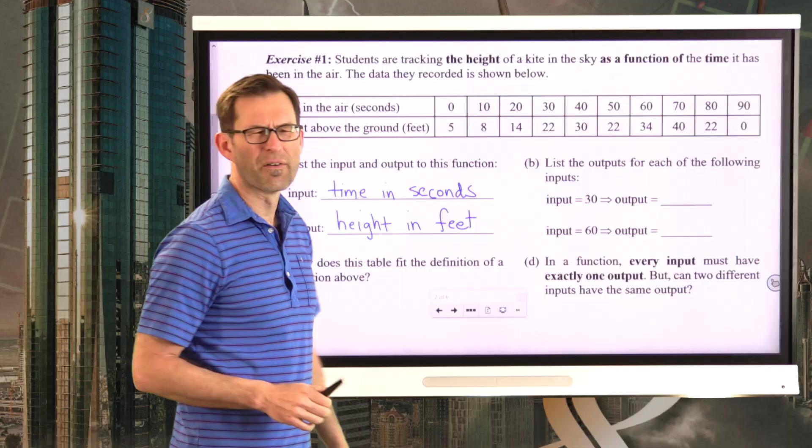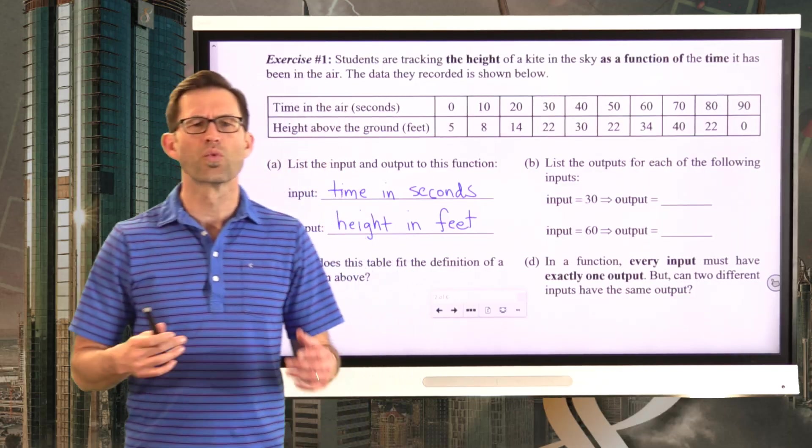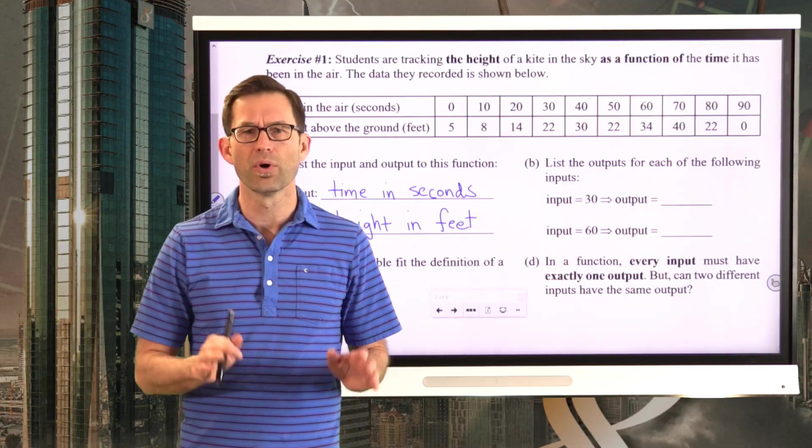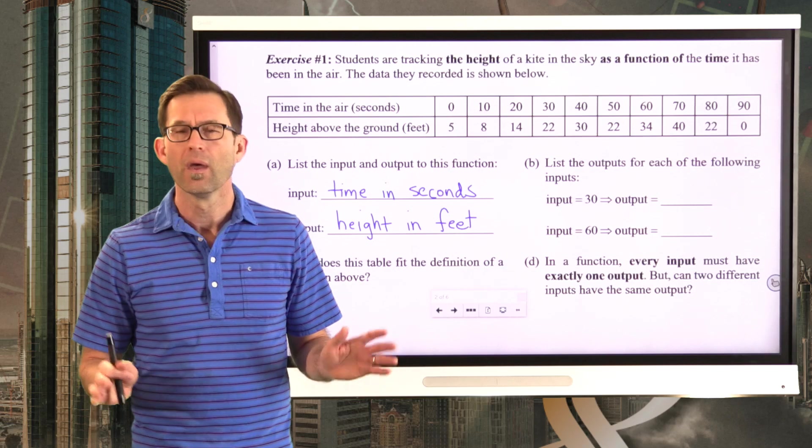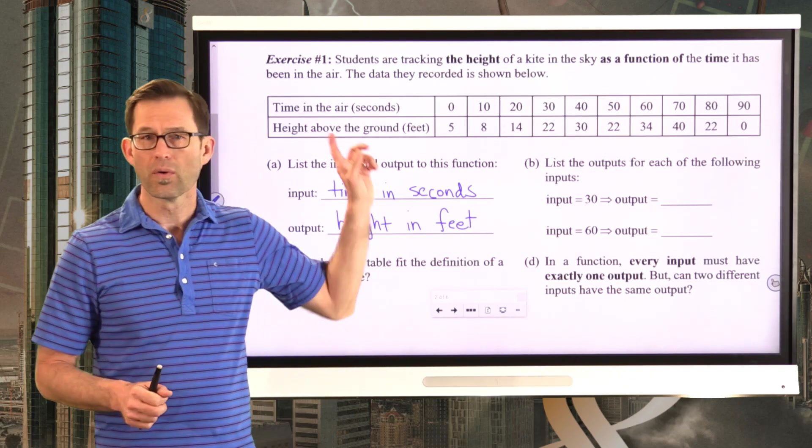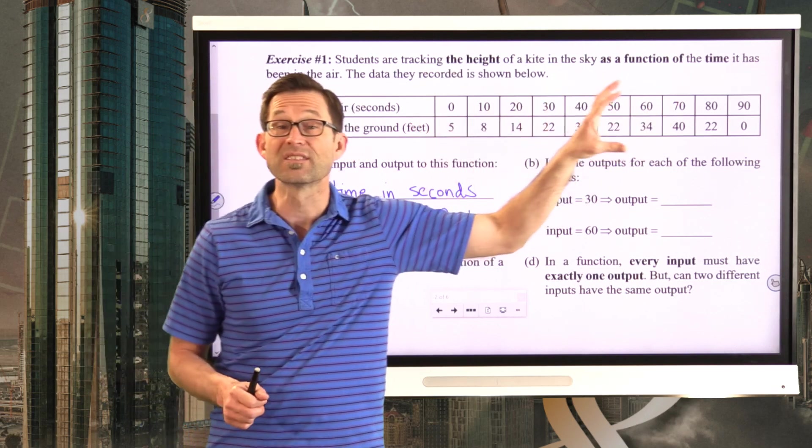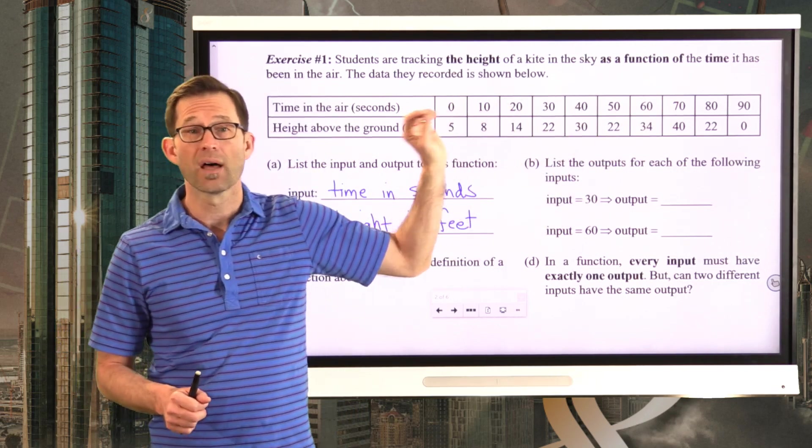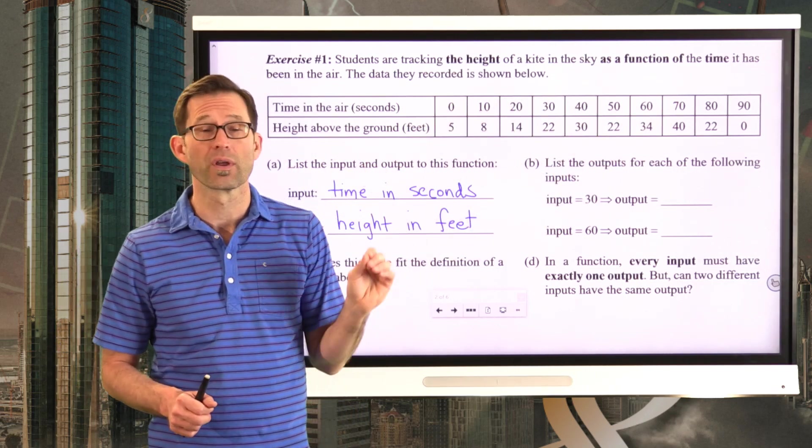Now remember, the definition of a function is a little bit weird because it says it's a rule that assigns for every input exactly one output. Now by assigning, what we literally mean is the rule. The rule is this table. This table is telling us how to assign outputs for a given input.